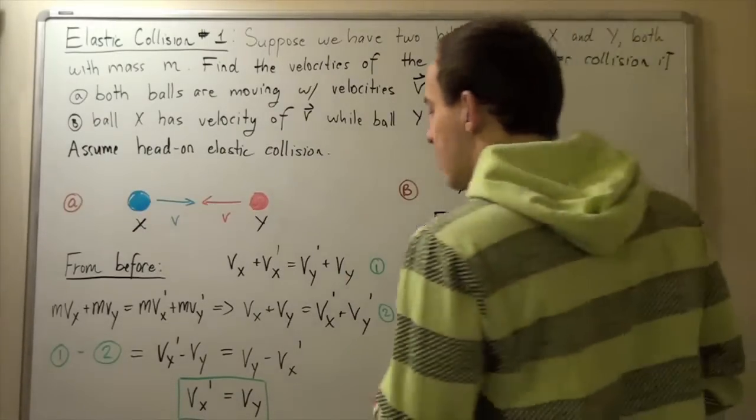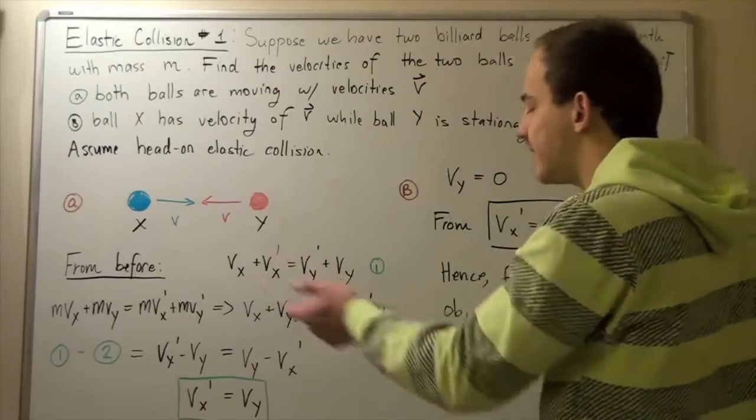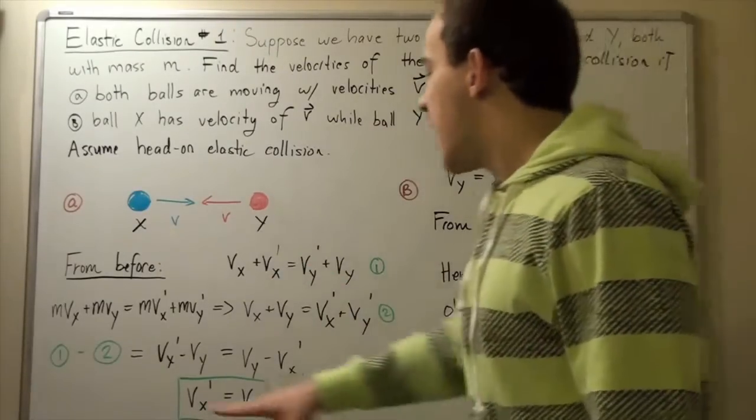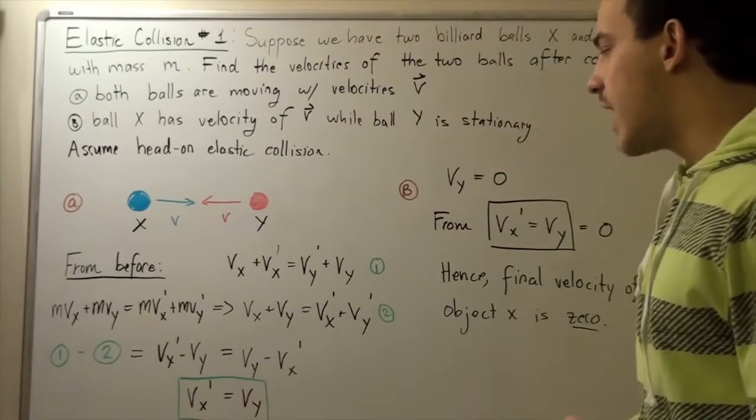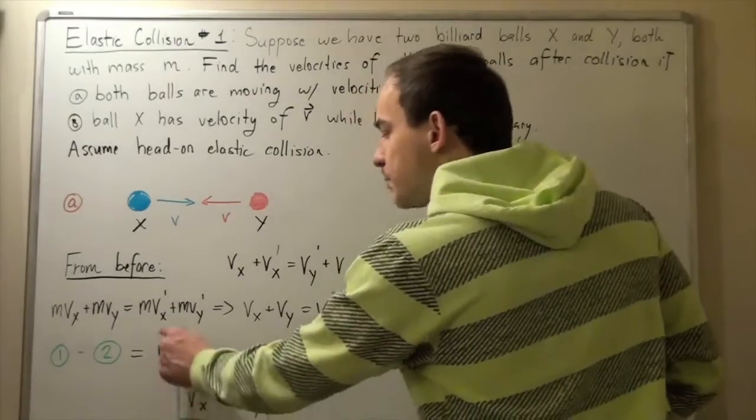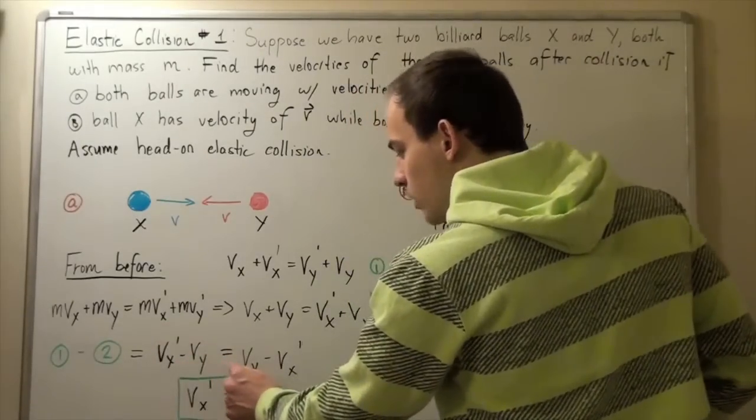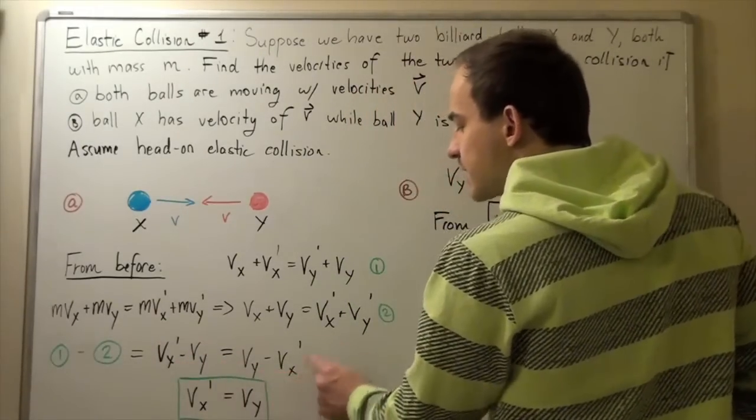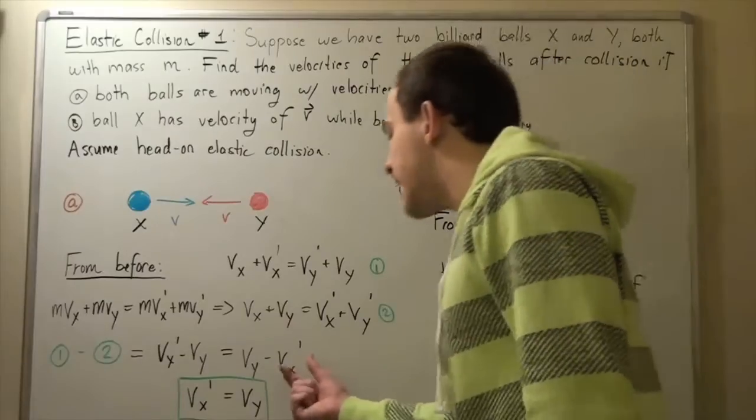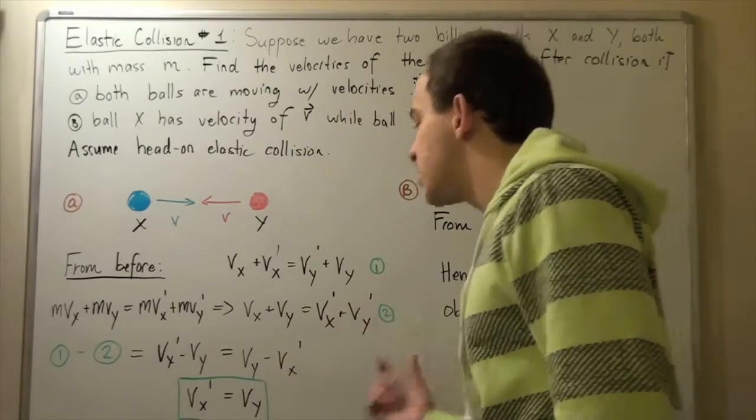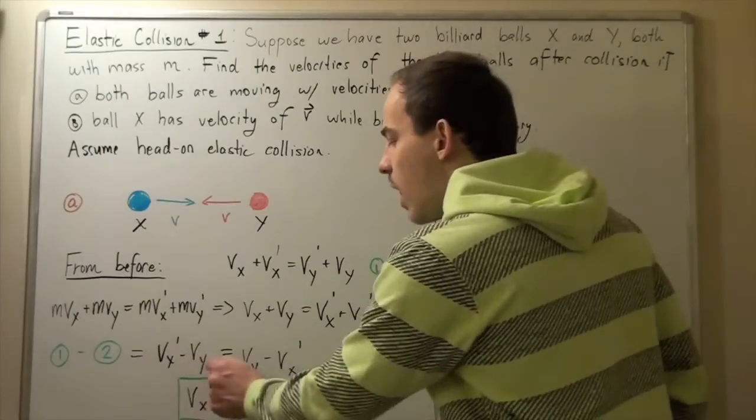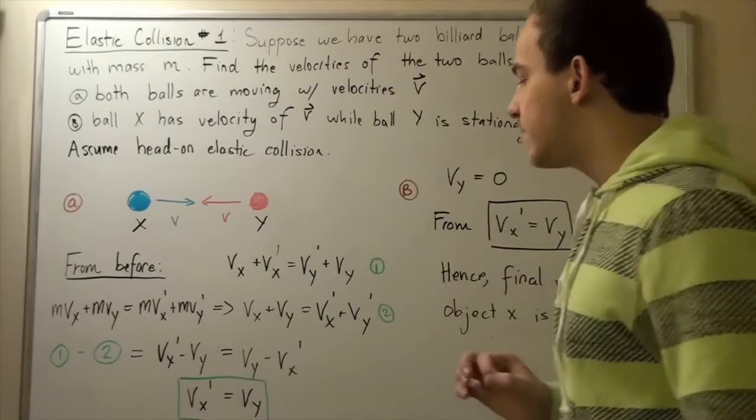Let's take equation two and subtract it from equation one. We get vx' - vy equals vy - vx'. Let's bring all the vx' terms on one side and all the vy terms on the other side.